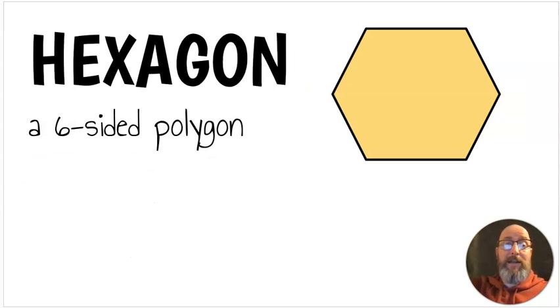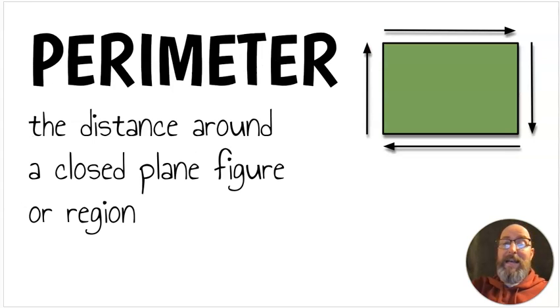Next, we have a hexagon. A hexagon is a six-sided polygon. So basically, it's a closed shape with six sides. Hex means six. Next, we have perimeter. A perimeter is the distance around a closed plane figure or region. Again, plane just means flat 2D. So the distance all the way around it, that's the perimeter.